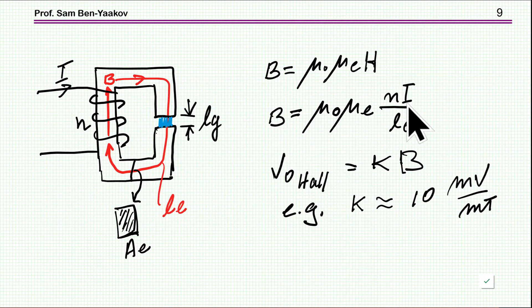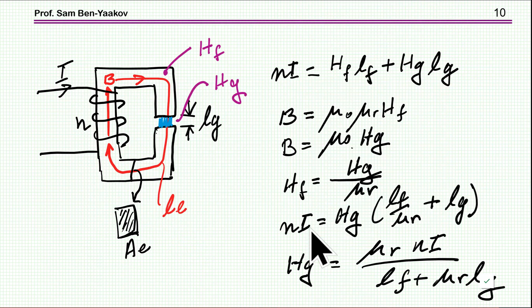Commercial Hall effect sensors are producing a voltage which is proportional to B, to the magnetic flux density. A typical constant of such a sensor will be like 10 millivolts per millitesla. So even for 100 millitesla, which is kind of a normal magnetic flux density in an inductor, you'll get one volt, which is very nice.